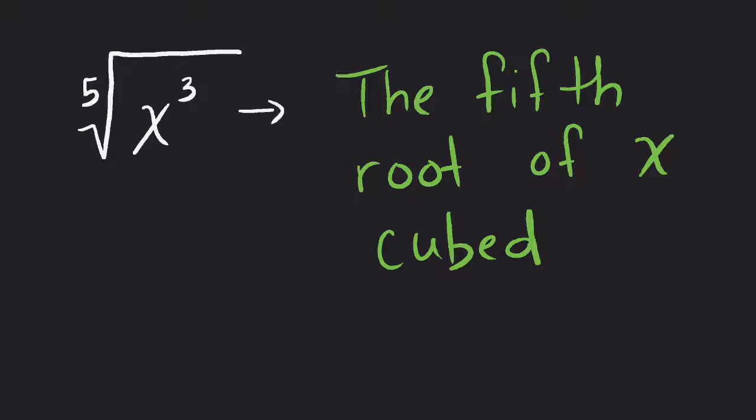The fifth root, that's my index, of x cubed, that's my radicand. That's all underneath that radical sign.